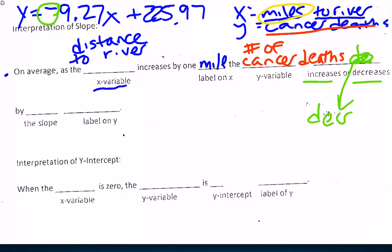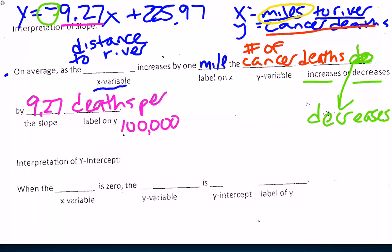I don't have room for that. So I'm going to write down here: it decreases by, what's my slope, 9.27. And what are my units for y? It was deaths per 100,000. So the number of cancer deaths decreases by 9.27 deaths per 100,000.